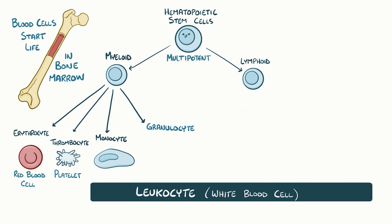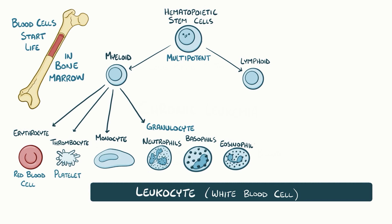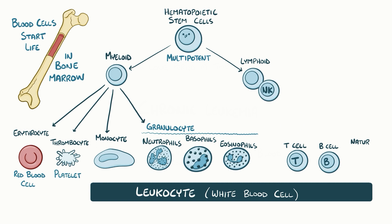Granulocytes are cells with tiny granules inside them, and they include neutrophils, basophils, and eosinophils. If a hematopoietic stem cell develops into a lymphoid cell, on the other hand, it'll mature into some other kind of leukocyte, like a T cell, a B cell, or a natural killer cell, which are referred to as lymphocytes.